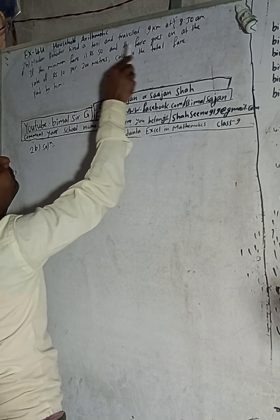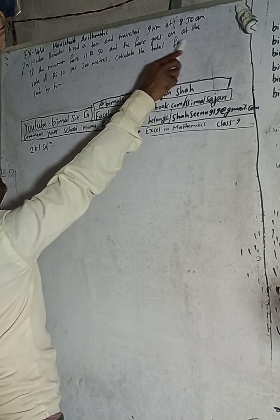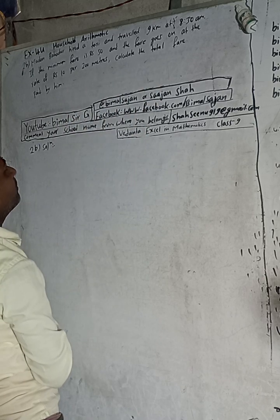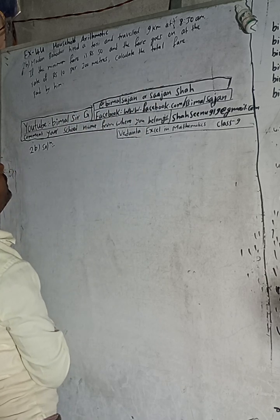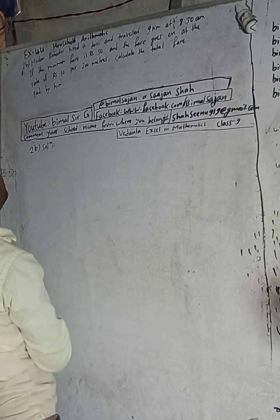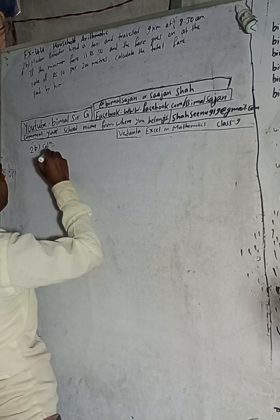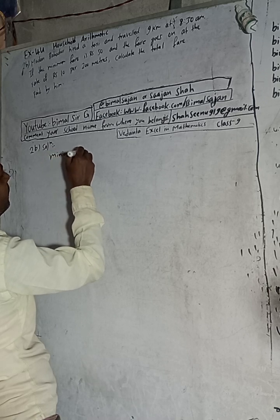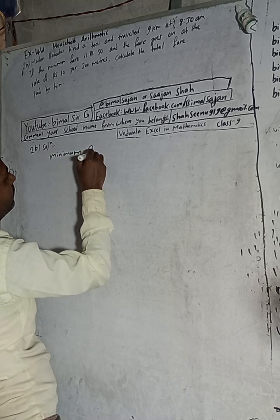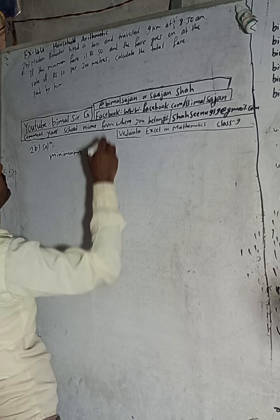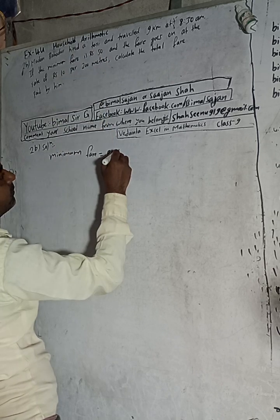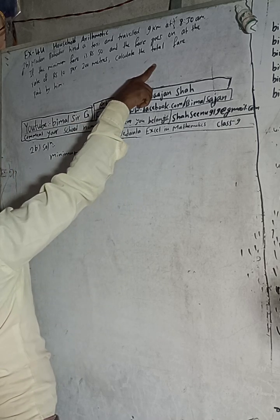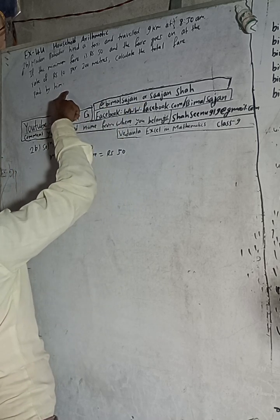If the minimum fare is Rs 50 and the fare goes at the rate of Rs 10 for 200 meters, calculate the total fare paid by him. Given: minimum fare is equal to Rs 50.